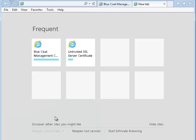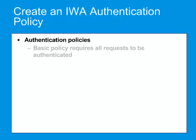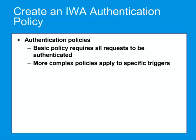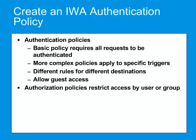For details on configuring Firefox, refer to the ProxySG First Steps Web Guide. Now we're ready to create the policy that enables authentication on the appliance. You can create a basic authentication policy that simply requires all requests to be authenticated, or define more complex policies with rules that apply to a specific source address, subnet, port, user agent, or request header, or define different rules for different destinations. You can also create policies that allow access to guest users, and create authorization policies that restrict access by user or group membership.